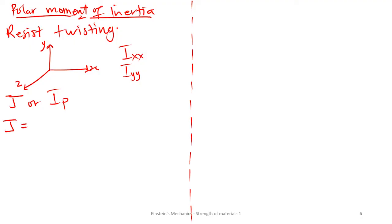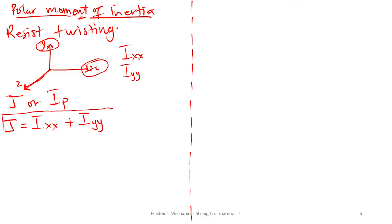Anytime you are finding the polar moment of inertia of a body, it is equal to the moment of inertia of the body about the x-axis plus the moment of inertia of the body about the y-axis. This makes sense because we are interested in whatever is happening on the third axis z — therefore we can add whatever happened at x and at y. The polar moment of inertia equals Ix plus Iy, and our unit is going to be in millimeters raised to the power 4.